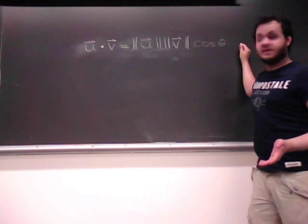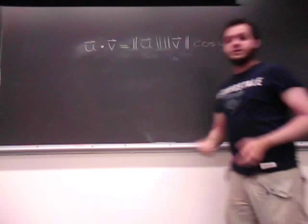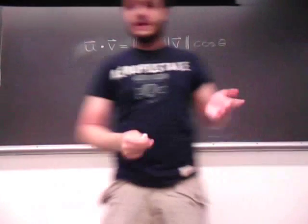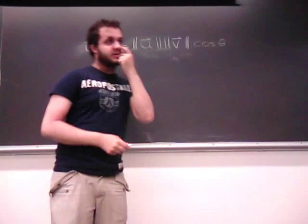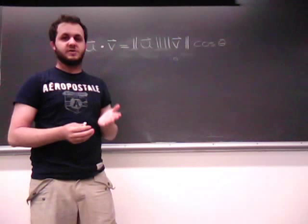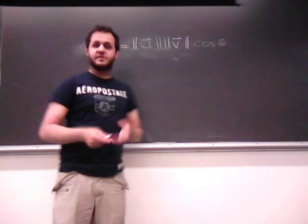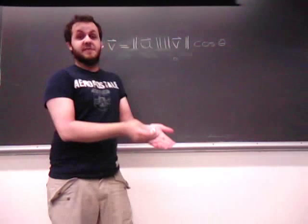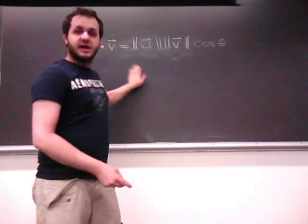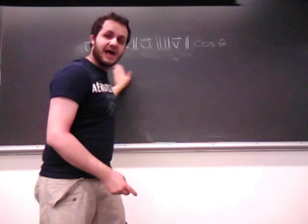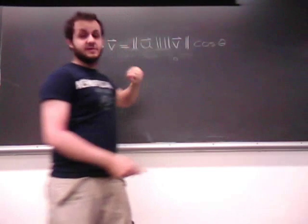So, we know by now the formula for the dot products of two vectors, u and v, in space. But what's a little bit unclear sometimes, directly, is the application of the dot product to physics and even mathematics.